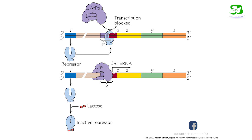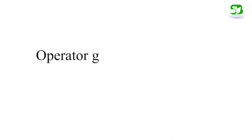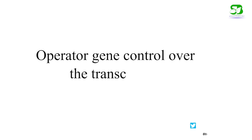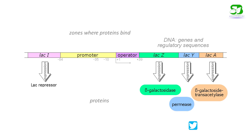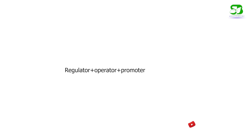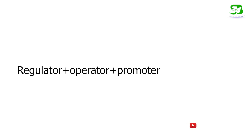The operator gene is the segment of DNA which exercises control over the transcription. The operator gene works like on and off switches in protein synthesis. The regulator, promoter, and operator genes together are called control genes.